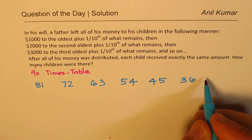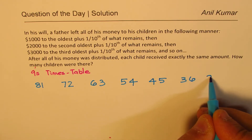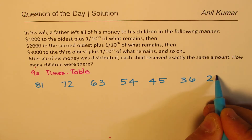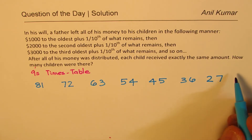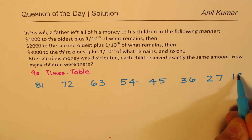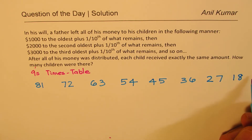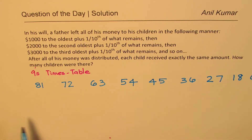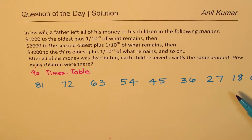And then it becomes 27 — so one side decreases, the other increases. Then 18, then 09. So that is the 9 times table. This is key to our understanding and the solution of this particular question.